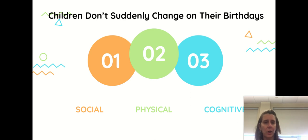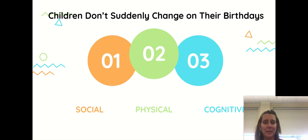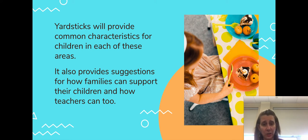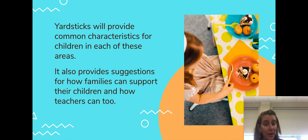Social, physical, cognitive. Children don't suddenly change on their birthdays — they turn a certain age and all of a sudden display the hallmarks of that age. That doesn't happen, and we need to remind ourselves of that. But what Yardsticks provides you with is some common characteristics you can start to look for around the changes in age, and it also talks a little bit about how you might support what's going on in school at home.